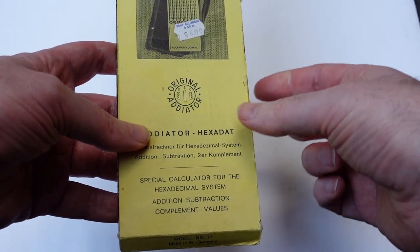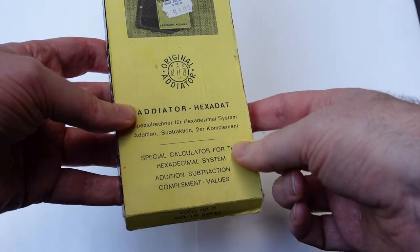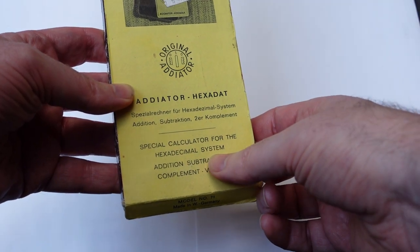And that's because this is an adiator called the Hexadat, which is for hexadecimal calculations.